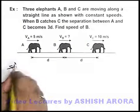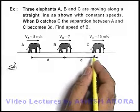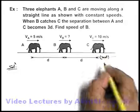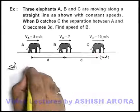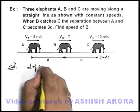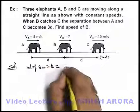In this question, as the physical situation is given, we take elephant C at rest. If we consider it to be at rest, then we can find the velocity of B with respect to C.